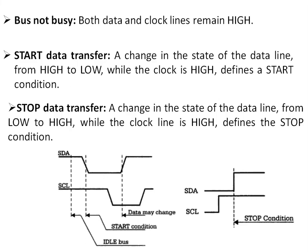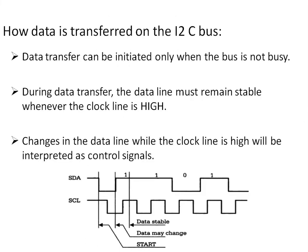A change in the state of the data line from low to high while the clock line is high defines the stop condition. These start and stop conditions are generated by the master. Data transfer can be initiated only when the bus is not busy. During data transfer, the data line must remain stable whenever the clock line is high — unlike for start and stop conditions where the data line changes state while the clock is high.